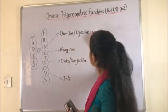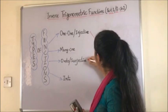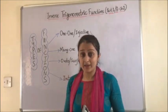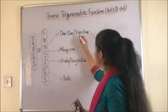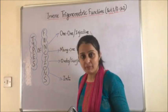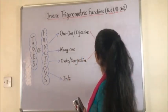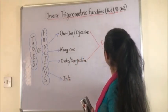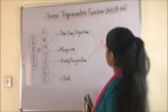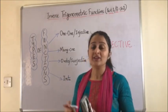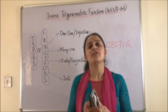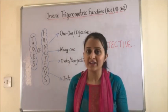If a function is one to one and onto simultaneously that means it is injective and surjective both, such a function is said to be a bijective function and inverse for such a function will exist.